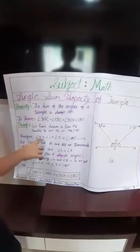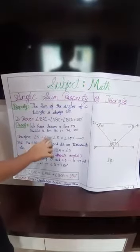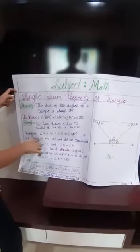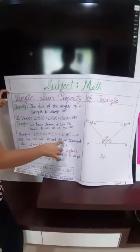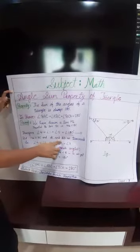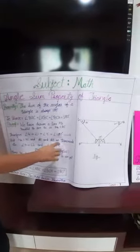Therefore angle 4 plus angle 1 plus angle 5 equal to 180. But BQ parallel to BC and AC and AB are transversals. So angle 4 equal to angle 2 and angle 5 equal to angle 3.